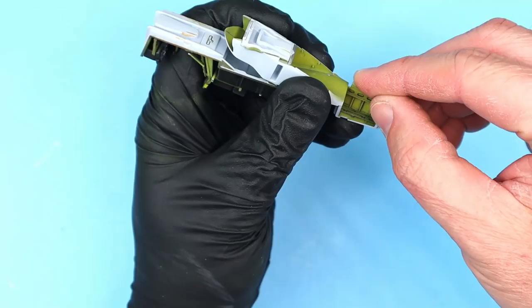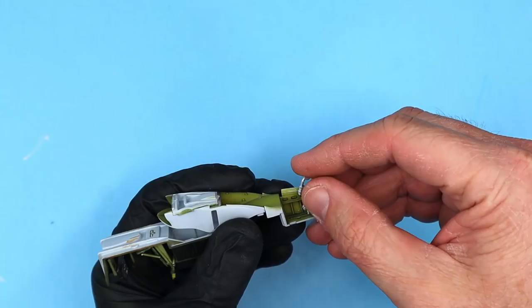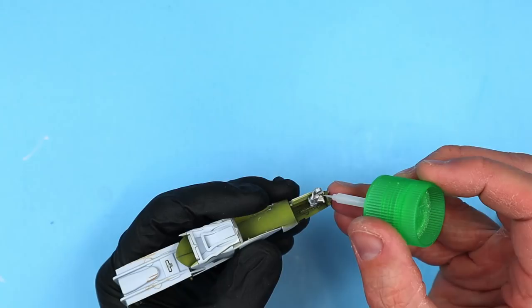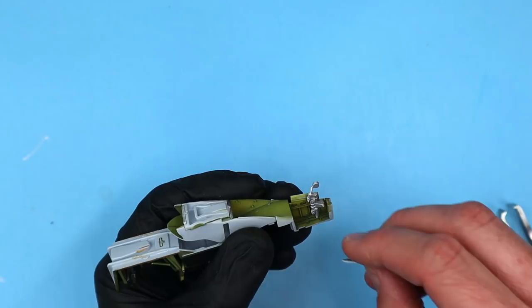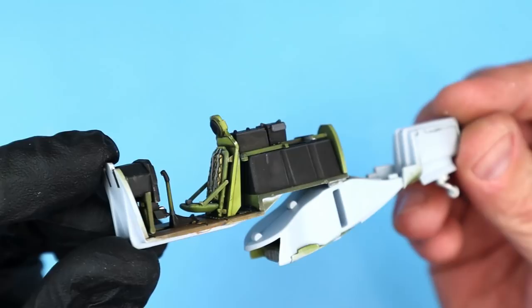Next the tail wheel bay sides are installed onto the cockpit section. I don't usually like installing landing gear components this early in the build but I could tell that it was going to be required for this build. I decided to hold off weathering the tail wheel gear until later in the painting process.